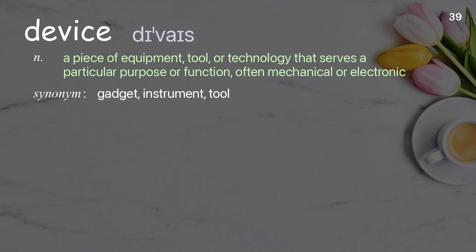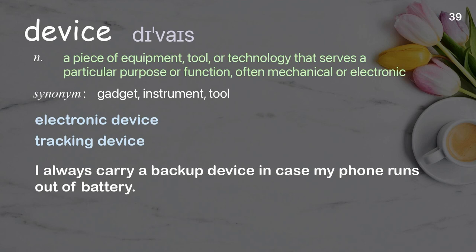Device: A piece of equipment, tool, or technology that serves a particular purpose or function, often mechanical or electronic. Examples: Electronic device. Tracking device. I always carry a backup device in case my phone runs out of battery.